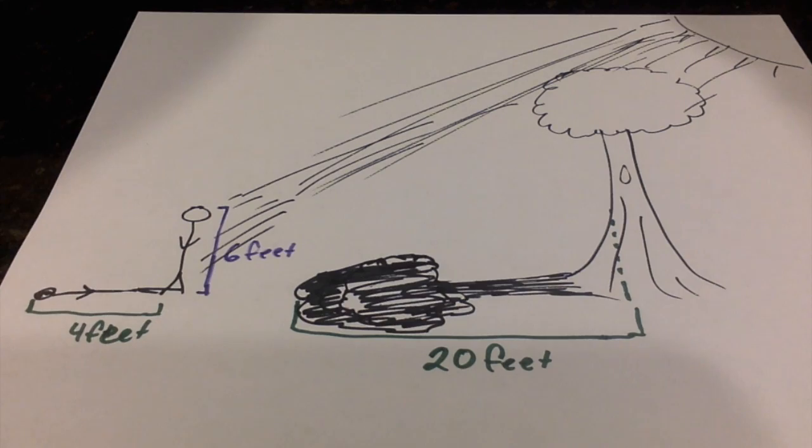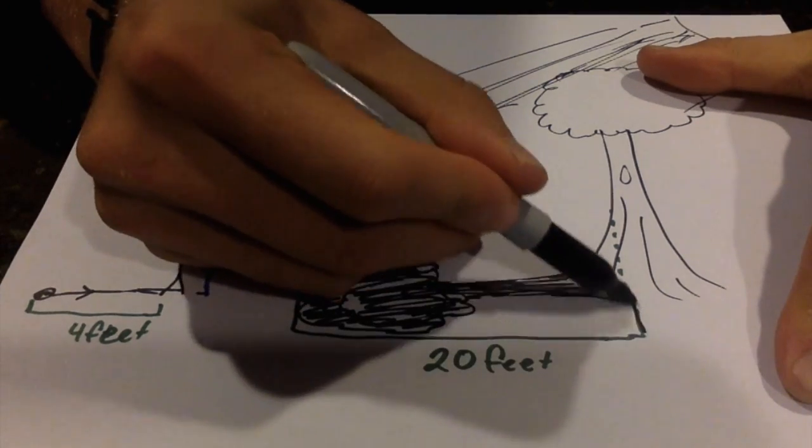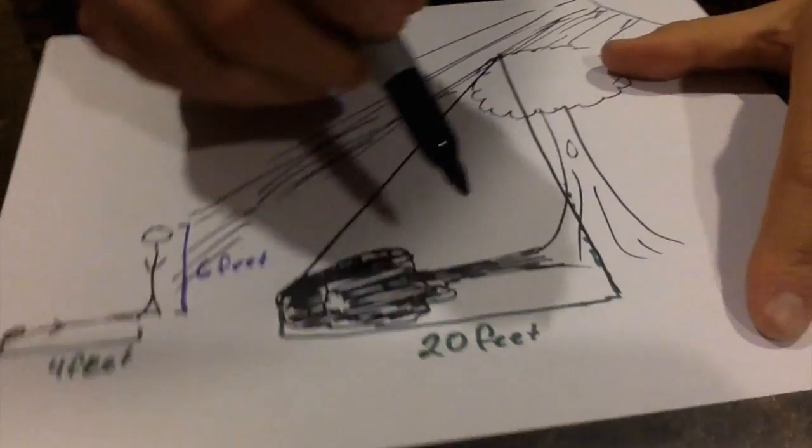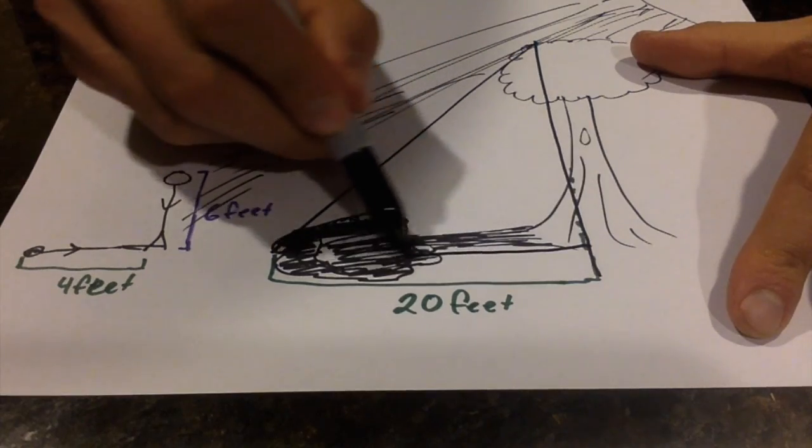We have a human that's six feet tall that casts a four-foot shadow. We're going to create a triangle from the top of the tree, and then it's going to come down to here, so we're going to end up with this triangle.